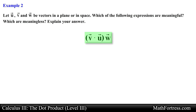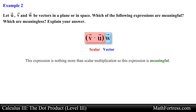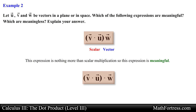The next expression is the quantity (v dot u) times vector w. The first operation, v dot u, will simplify to a scalar which will then be multiplied by vector w. This is nothing more than scalar multiplication, so this expression is meaningful. Notice the only difference from the first expression is that here we are multiplying, not taking the dot product.